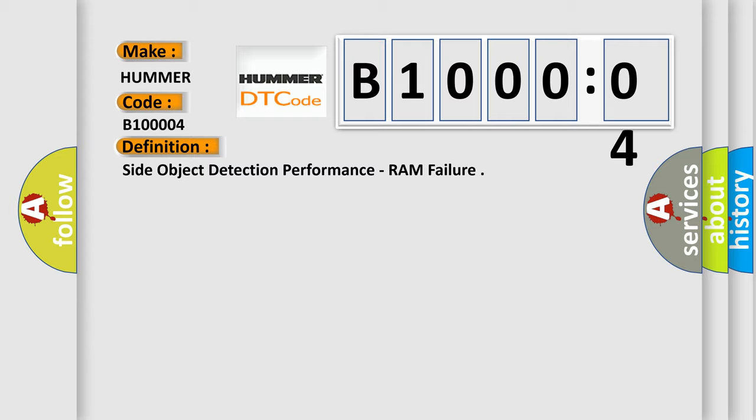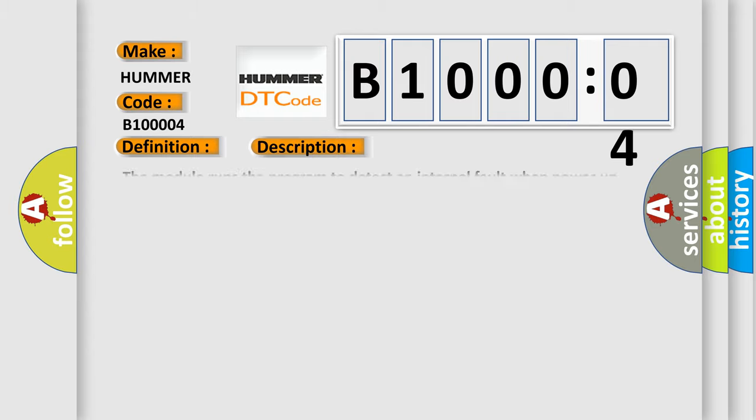And now this is a short description of this DTC code. The module runs the program to detect an internal fault when power up is commanded. The only requirements are voltage and ground. This program runs even if the voltage is out of the valid operating range.